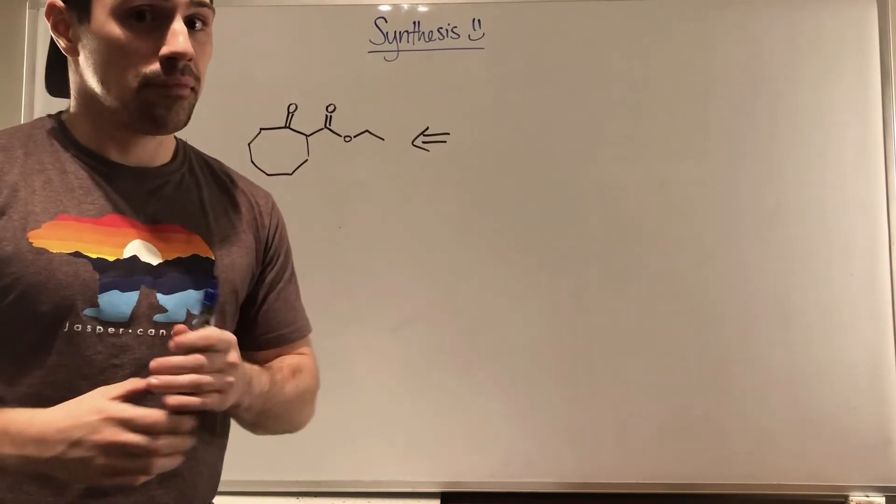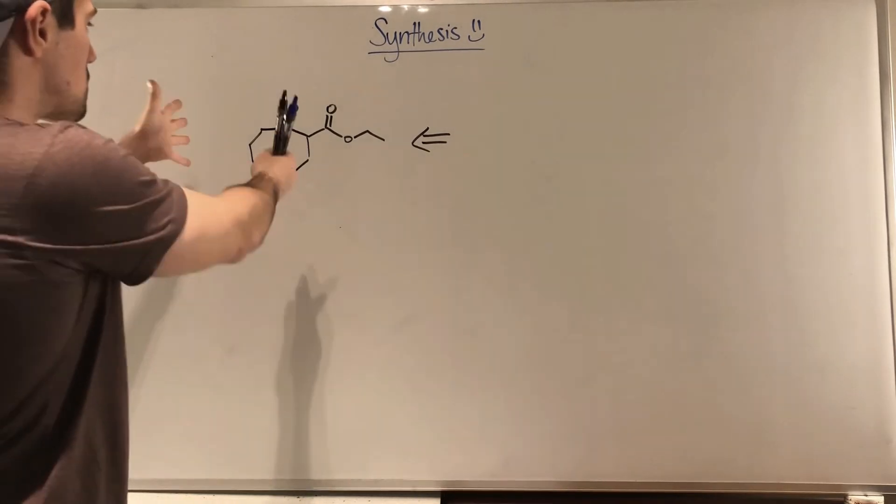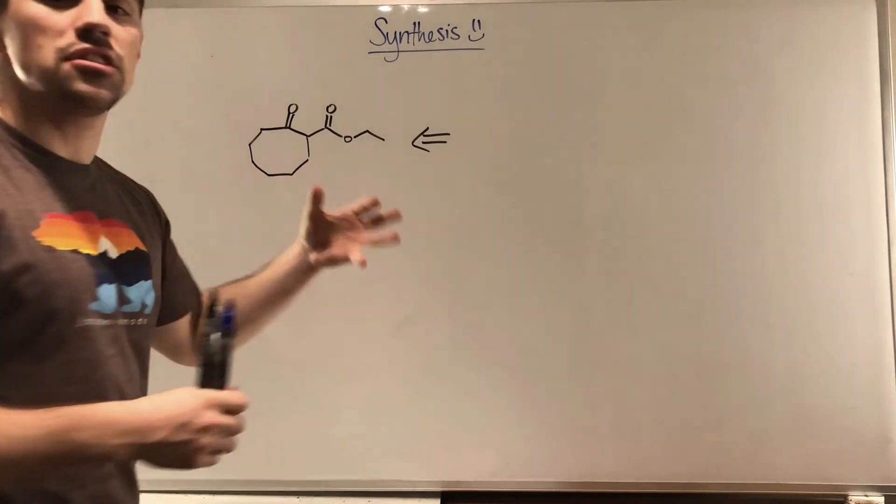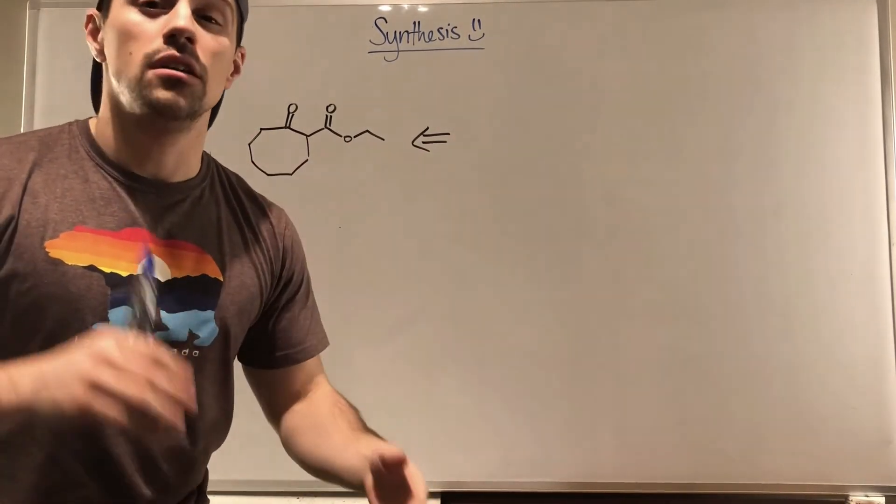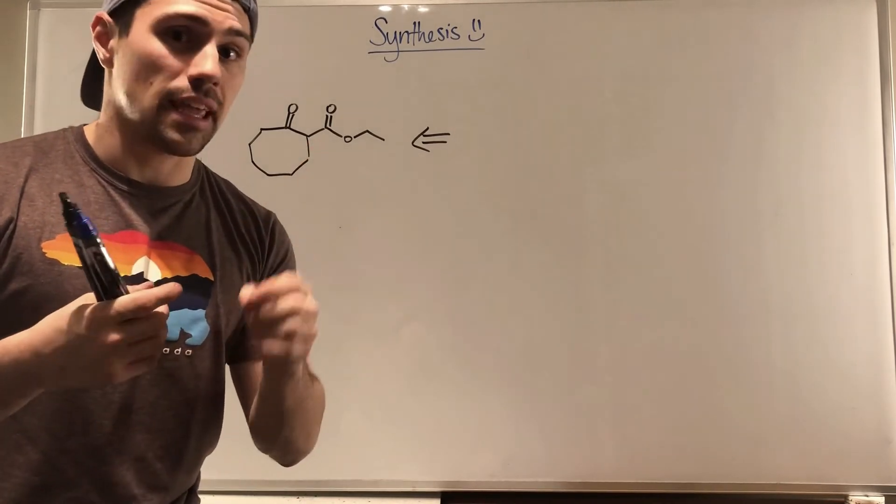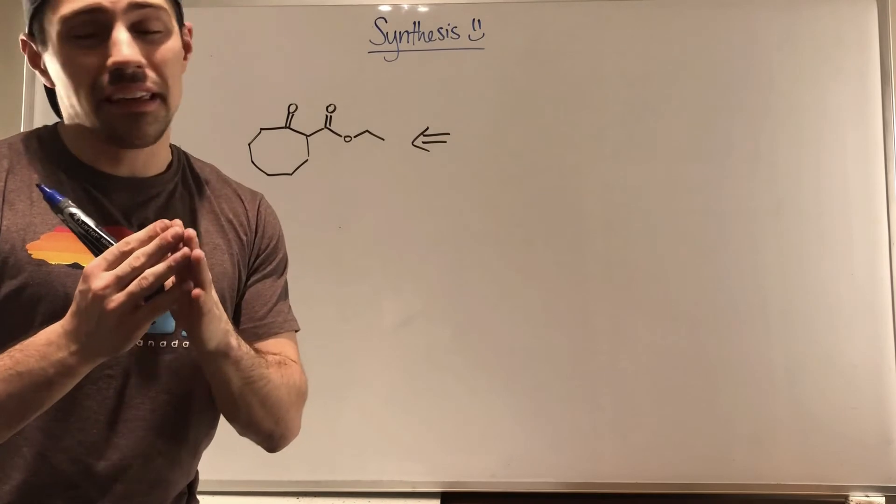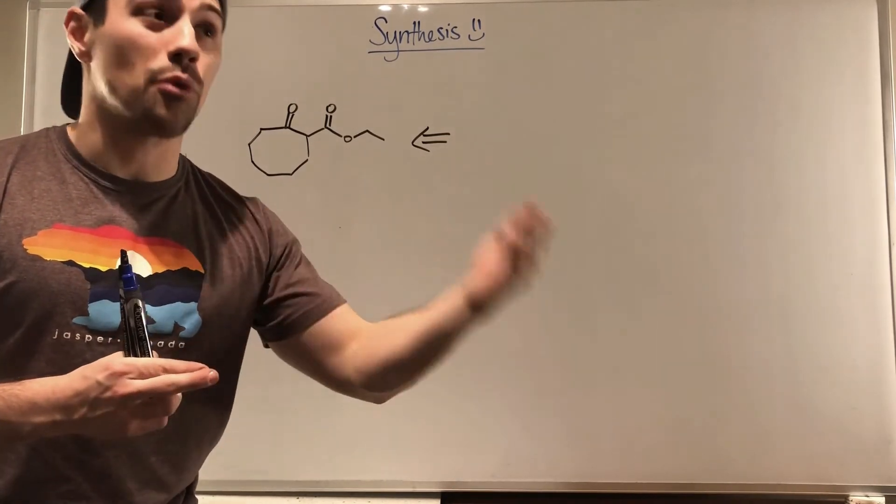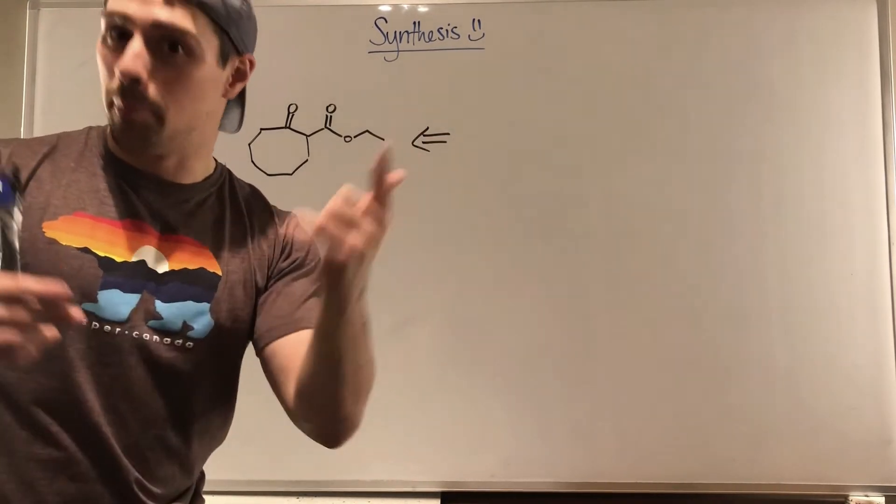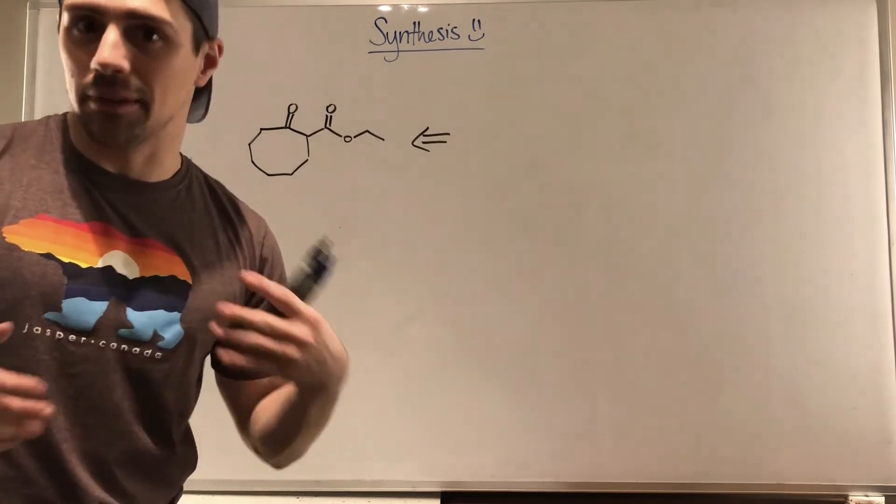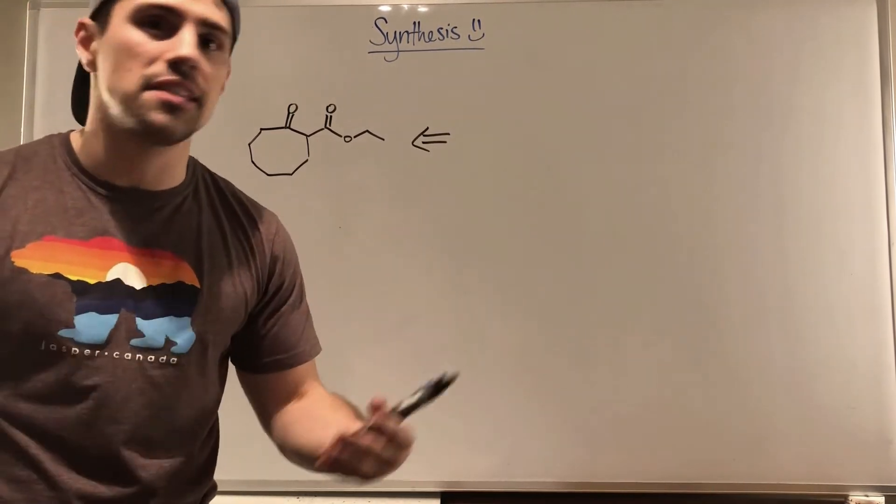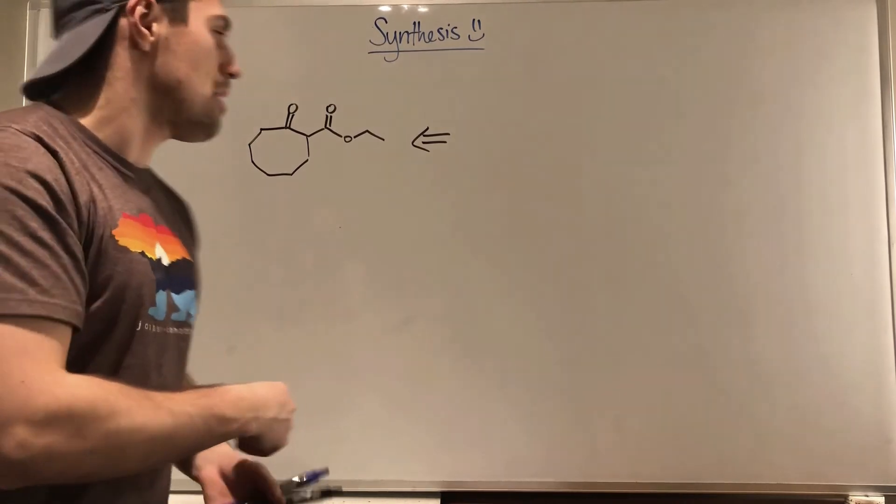Okay gang, last one. So given this product right here, how can we break this into the components that helped form it? So I hope you're sitting there thinking, hmm, I see a ring, maybe thinking a Dieckman condensation and not to spoil the surprise, but you're absolutely right. We're going to do a Dieckman condensation here, which is basically a Claisen, but just forming a ring.